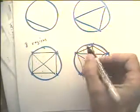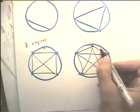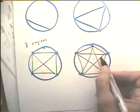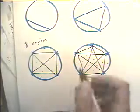How many regions do we have? One, two, three, four, five, six, seven, eight, nine, ten, eleven, twelve, thirteen, fourteen, fifteen, sixteen regions.